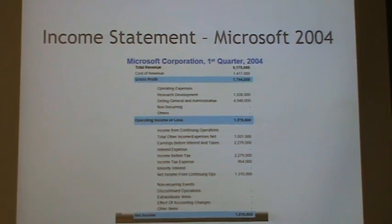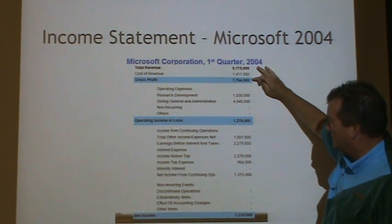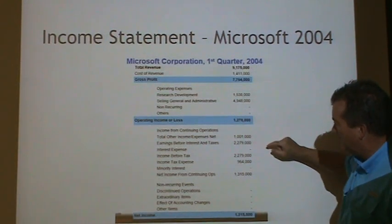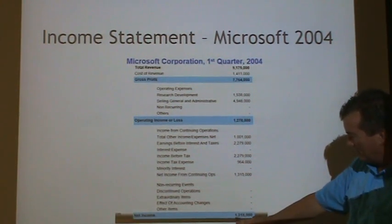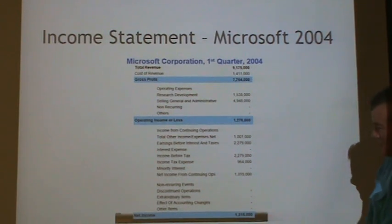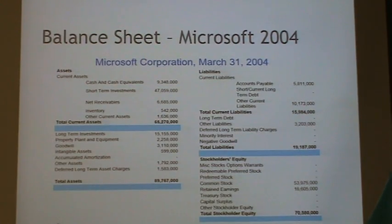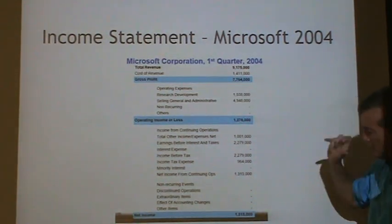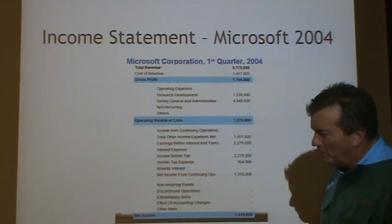Here's Microsoft's income statement for that same time period. This section would be all the revenue that came in, the gross profit, and the operating income or loss. How much money they made before taxes, and eventually the net income is $1.3 million. So at a time when the company's net worth was $70 million, during this first quarter — a three-month period — they made a profit of $1.3 million.